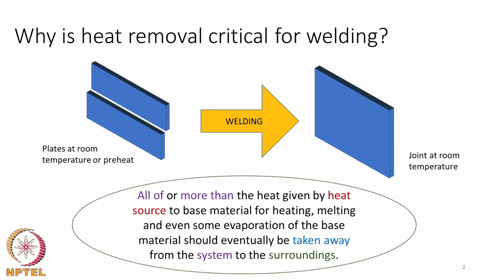Why is Heat Removal very important in the topic of welding? The two parts that have to be joined will be usually at room temperature, and after the welding process is completed we want a single piece with the joint again at room temperature. This means we have to take away all the heat given through the heat source, and sometimes more than that — because sometimes we may have a preheat, such as in superalloy welding at elevated temperatures. All this heat must be taken away from the weldment into the surroundings.